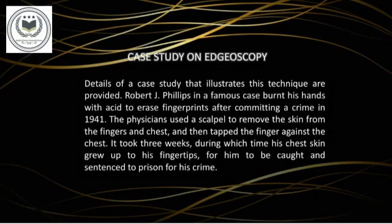Case Study on Edgoscopy. Here is a case which gives an example of the importance of edgoscopy. It was a famous case in which a criminal named Robert J. Phillips had burned his fingers with acid in order to erase the fingerprints after committing a crime. Then the physicians used a scalpel to remove the skin from the burned fingers and also from some parts of the chest. They then taped the finger against the chest. It took nearly three weeks, during which his chest skin grew up to his fingertips and the ridge edges were clearly visible. And when compared, he was found guilty and was sentenced to prison for his deeds.